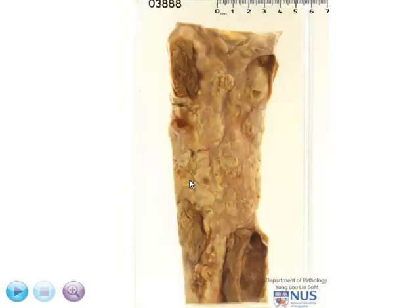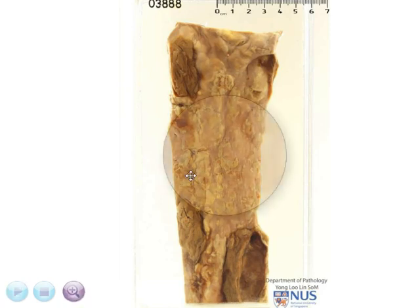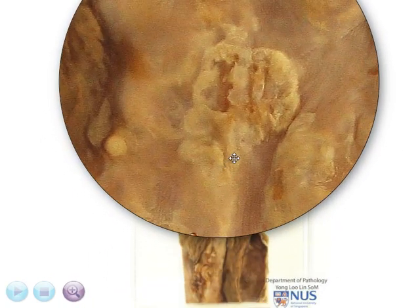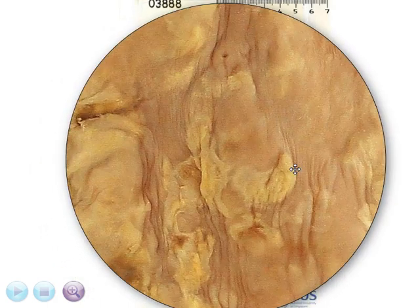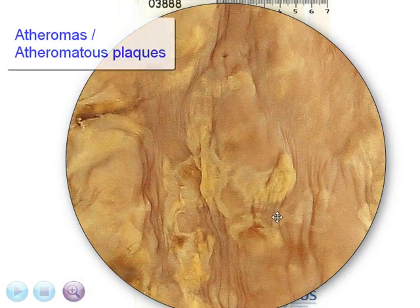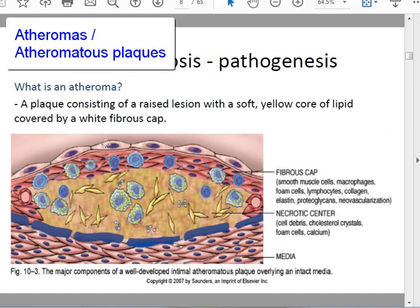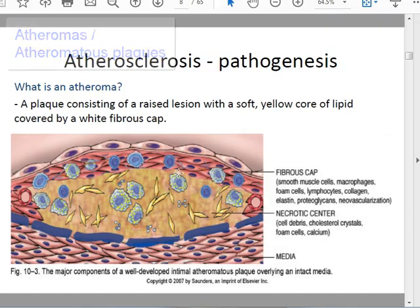Most of the pathology is actually in the intima, so when we look at the inner surface of the aorta, we can appreciate that there are some yellowish deposits beneath the endothelium. These deposits are within the intima, and they are known as atheromatous plaques or atheromas. Atheromas are composed of lipids as well as foam cells and reactive cells from our body, which includes smooth muscle cells, macrophages, and some inflammatory cells.